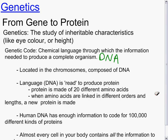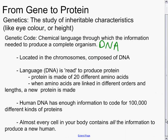Human DNA has enough information to code for about 100,000 different kinds of proteins. And almost every cell in your body contains all the information needed to produce a new human.